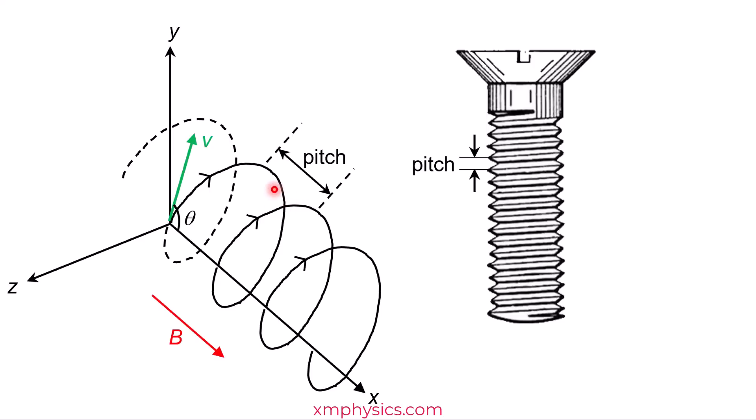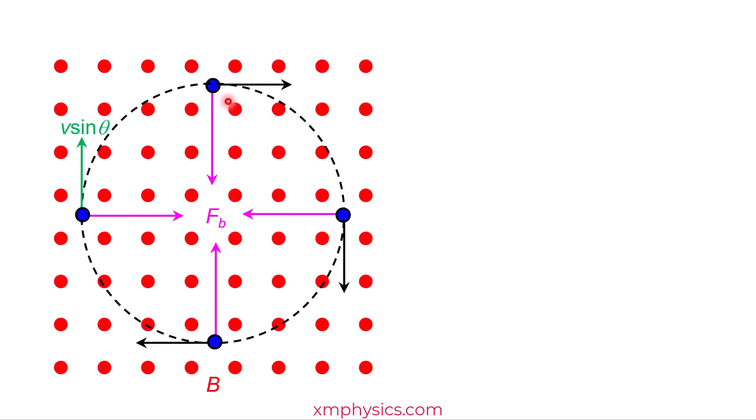This distance here is called the pitch. So for the helical path, it's the distance between two same positions of the circular motion. So to calculate this distance, we must first calculate how long it takes for the motion to complete one circular motion. To do that, we must first analyze the circular motion.